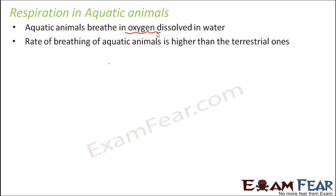The rate of breathing of aquatic animals is quite high compared to terrestrial animals, because the amount of oxygen dissolved in water is much less than the amount of oxygen present in air. Since oxygen is less in water, the animal will try to breathe faster to take more oxygen. For example, if you are supposed to breathe five times in a given time frame but the oxygen is reduced, you may have to breathe many more times to absorb sufficient oxygen. So the rate of breathing of aquatic animals is higher because the amount of oxygen dissolved in water is quite less than that in air.